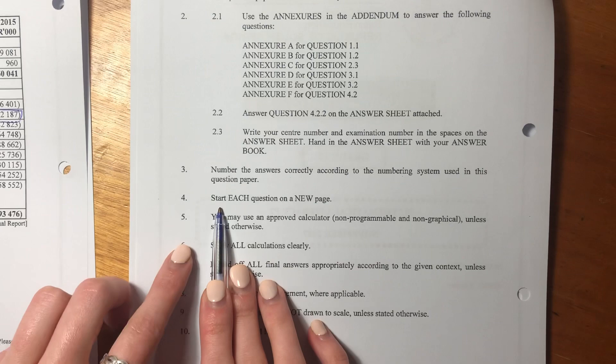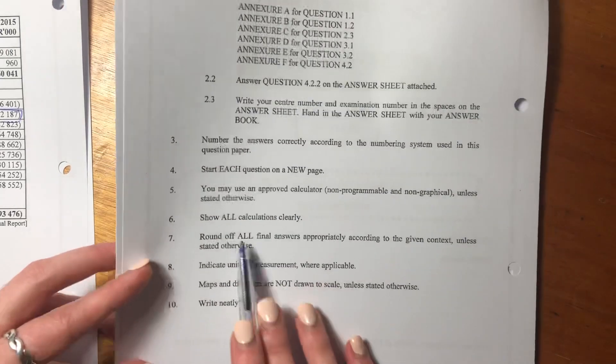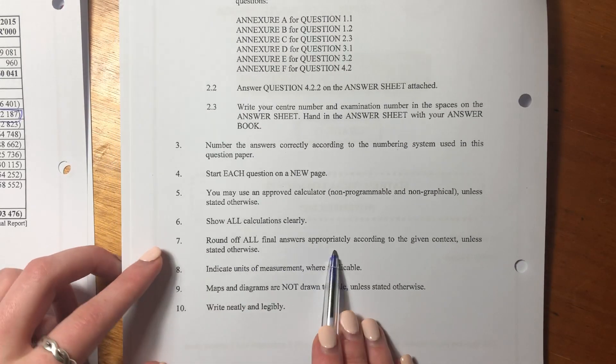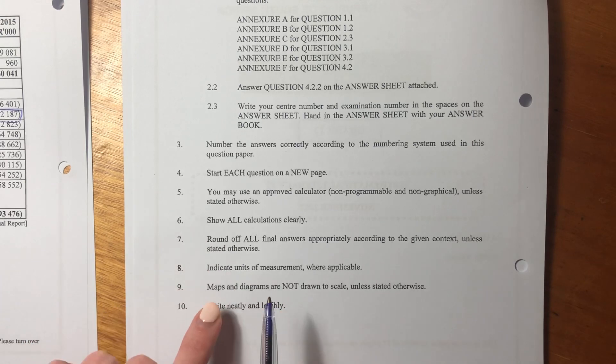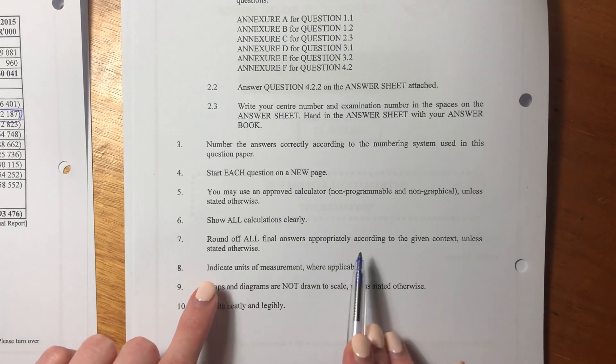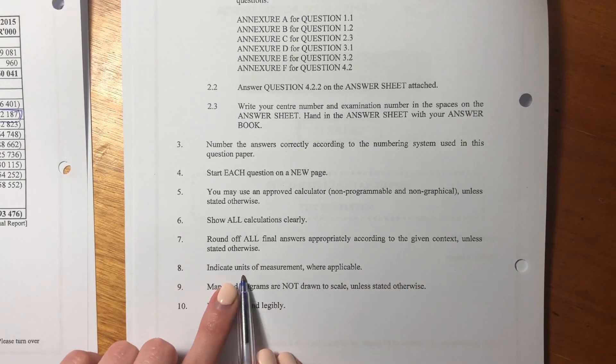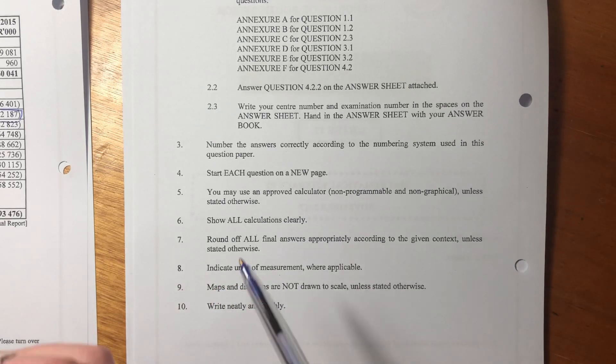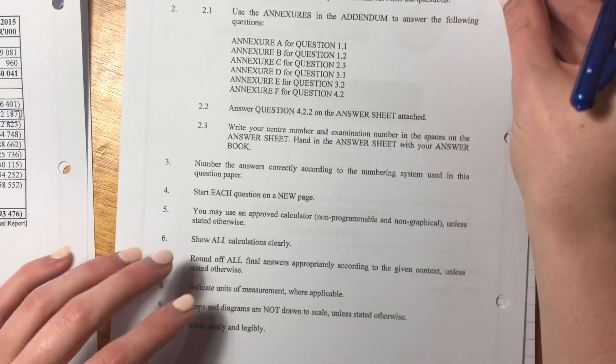So it says start each question on a new page. All final answers can be rounded off depending on the context or where it's stated, and then it says use units of measurement. So I've just drawn out some important pieces that we often forget, but let's now start the paper.